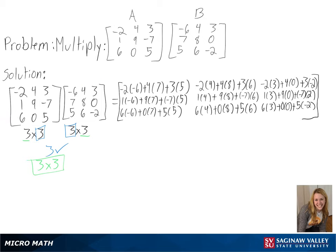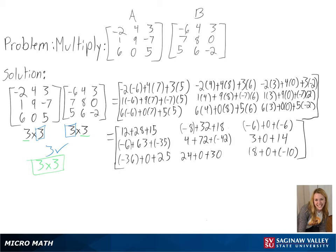Since all of our rows and columns have been multiplied, we can now start simplifying. We will begin with multiplying everything out, and then we can add all of our numbers. And with that, we have solved matrix AB.